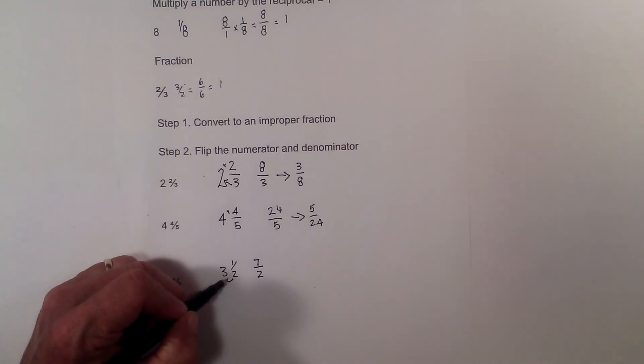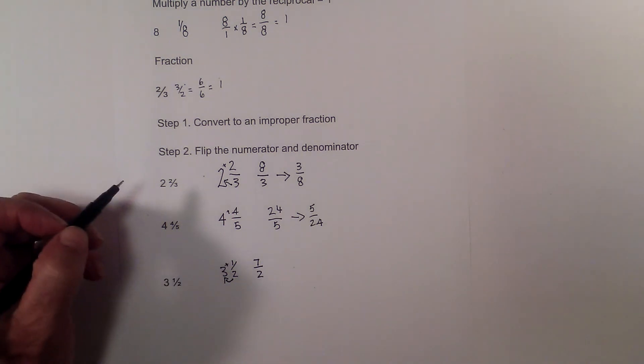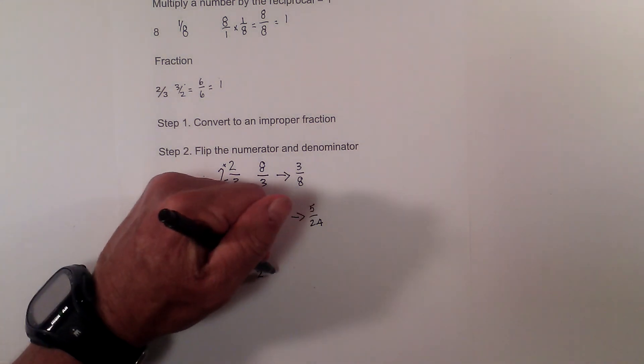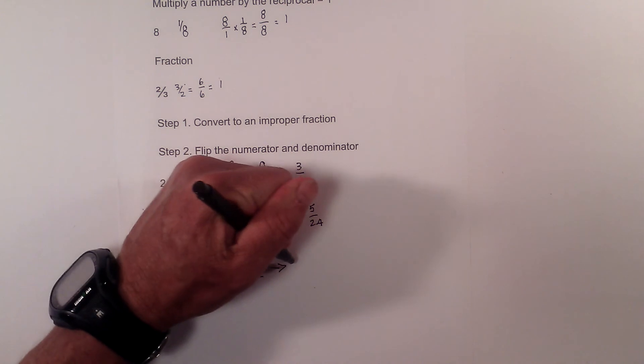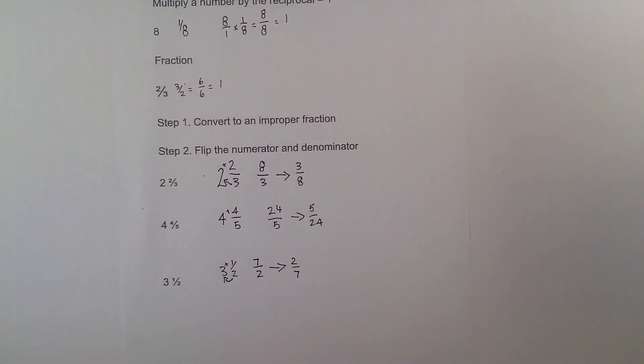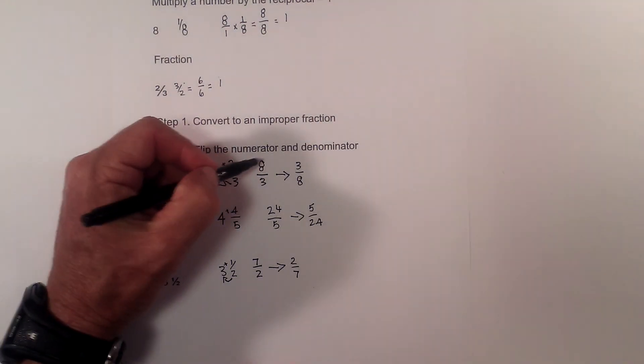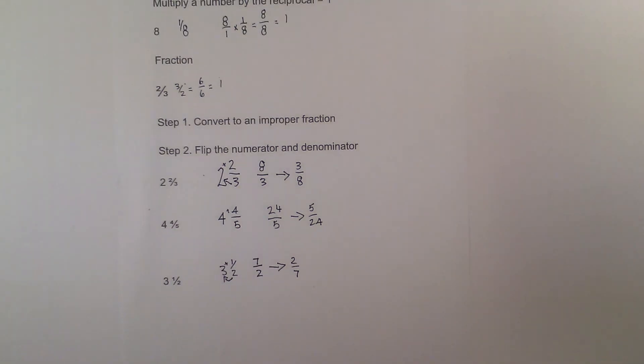Again, I took 2 times 3, added the numerator, and the reciprocal is 2 over 7. And in each of these, if you multiply them out, they are going to equal 1. So there we go, creating a reciprocal of a mixed number or a mixed fraction. Thanks for watching. Moomoo Math uploads a new math and science video every day. Please subscribe and share.